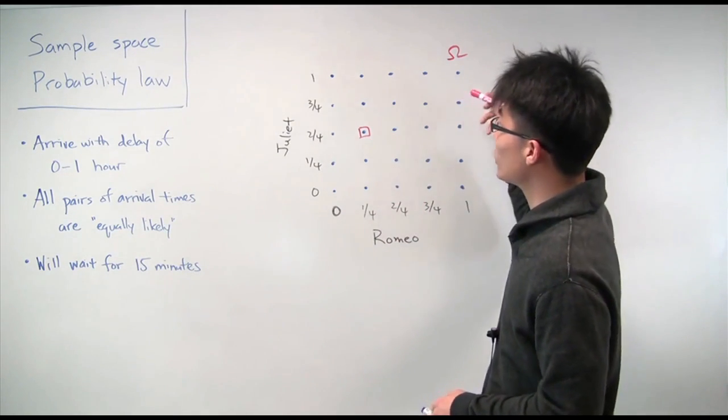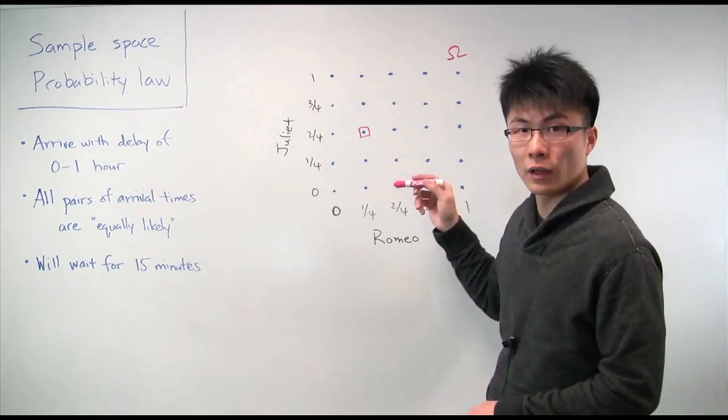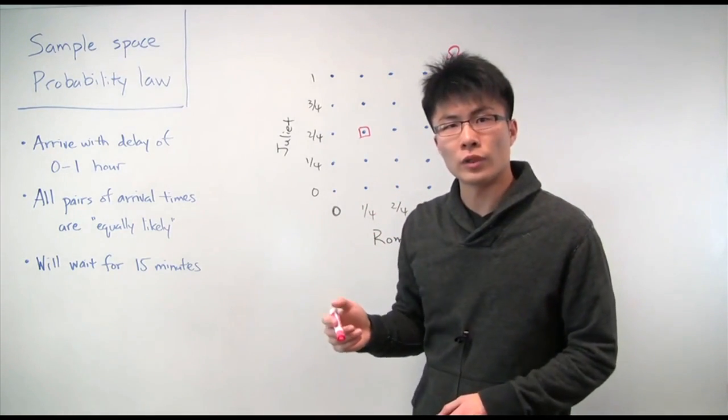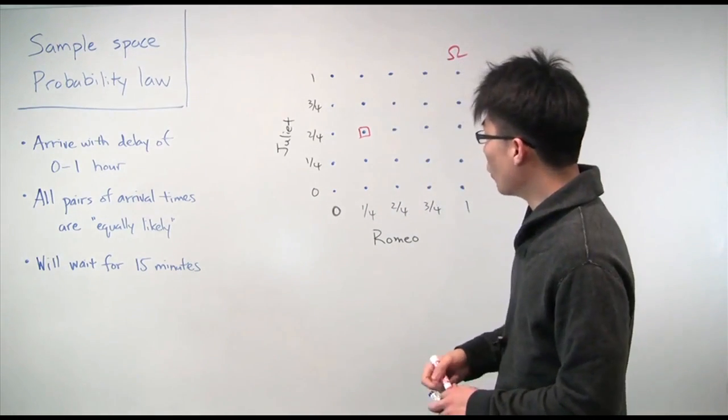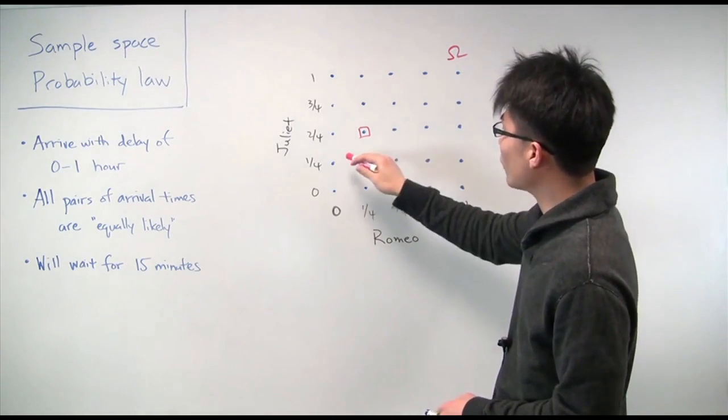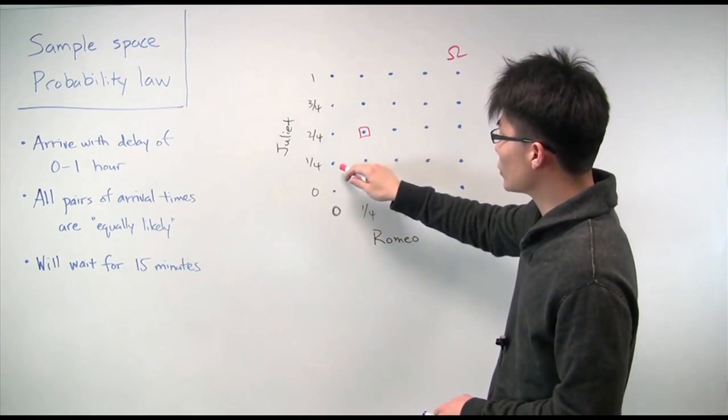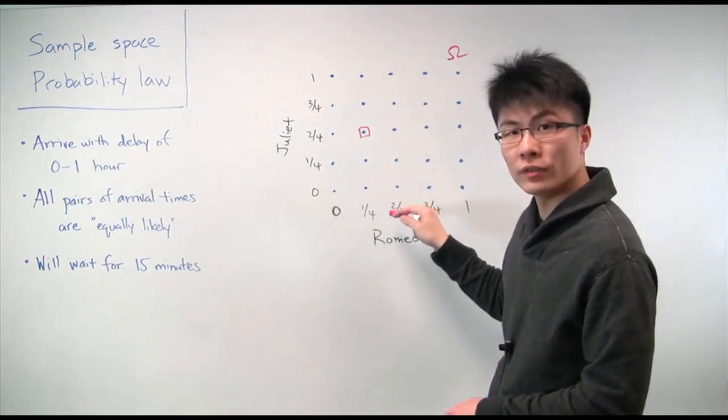So now we've specified our sample space and our probability law. So now let's try to answer the question, what is the probability that Romeo and Juliet will meet up for their date? All that amounts to now is just identifying which of these 25 outcomes results in Romeo and Juliet arriving within 15 minutes of each other.